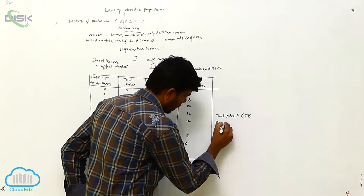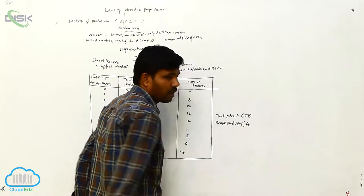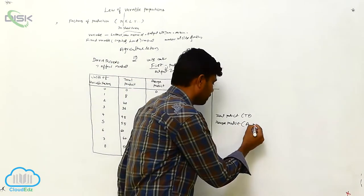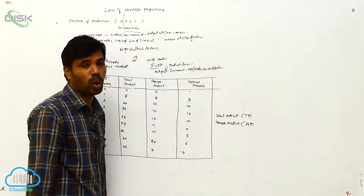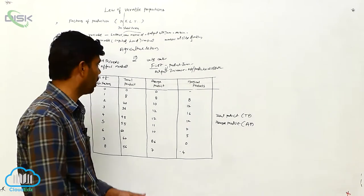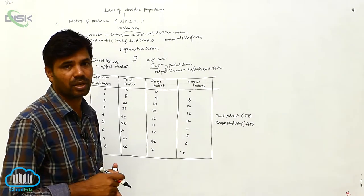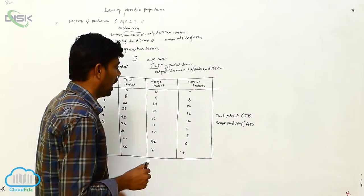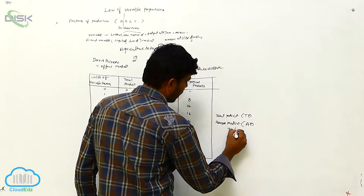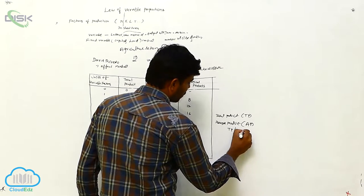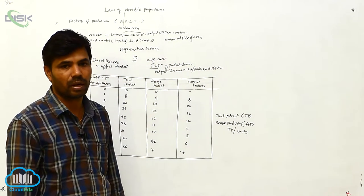Next is average product, denoted as AP. How to get the average product? Total output — that is, total product — divided by the number of variable units. You are getting the average product. Like: TP divided by units gives you the average product.